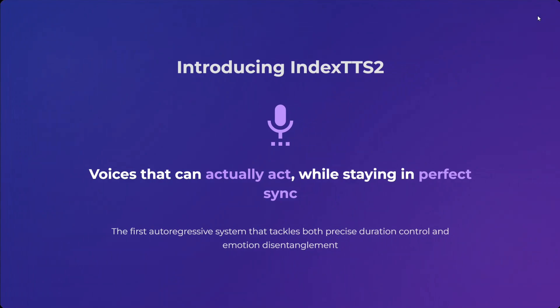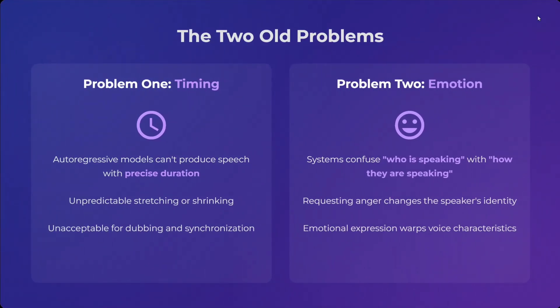Introducing Index TTS 2 — voices that can actually act while staying in perfect sync. It's the first auto-regressive system that tackles both precise duration control and emotional disentanglement. There are two problems that existed with previous TTS models. Problem one: auto-regressive models at the core of TTS can't produce speech with precise duration — unpredictable stretching or shrinking makes audio shorter or longer, which is unacceptable for dubbing and synchronization. Problem two: the system confuses who is speaking with how they are speaking — requesting anger changes the speaker's identity.